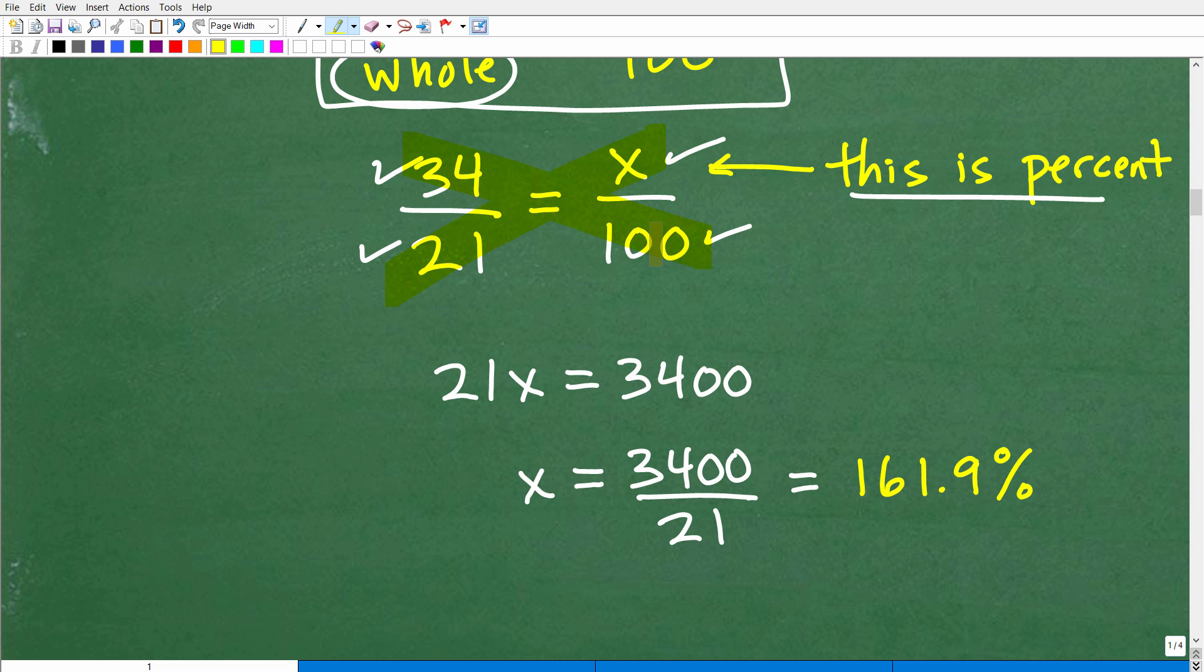So here, let's go ahead and just use the cross product. So 21 times X is 21X. 34 times 100 is 3,400. Now to solve for X we just simply divide both sides of the equation by 21.